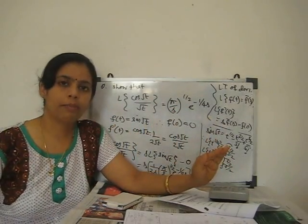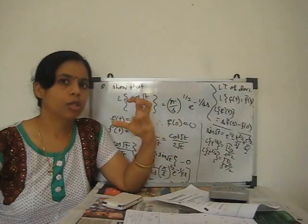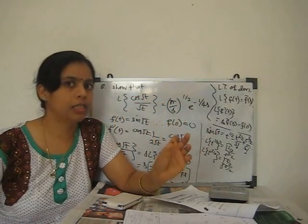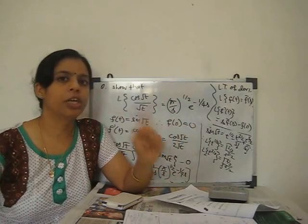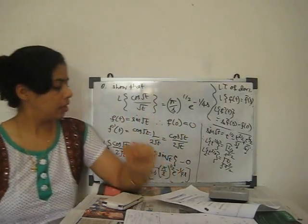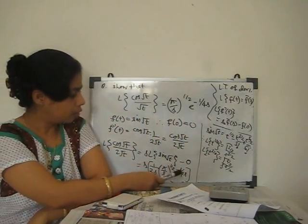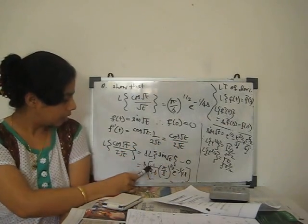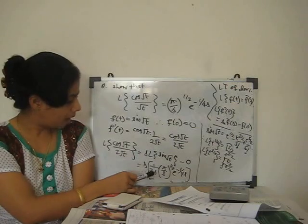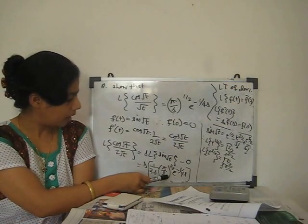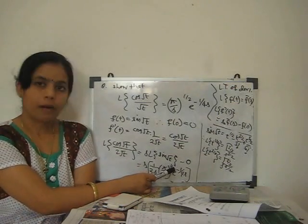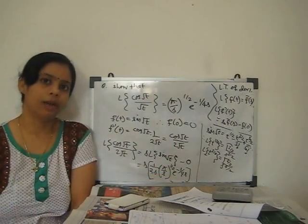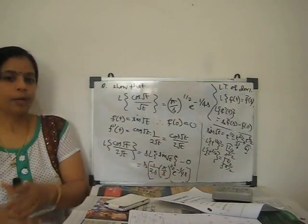Taking the common factor out, the remaining series is recognized as the exponential series e^(−1/(4s)). Therefore, the Laplace transform of sin√t is (1/2)·√(π/s)·e^(−1/(4s)). You can easily substitute this back.